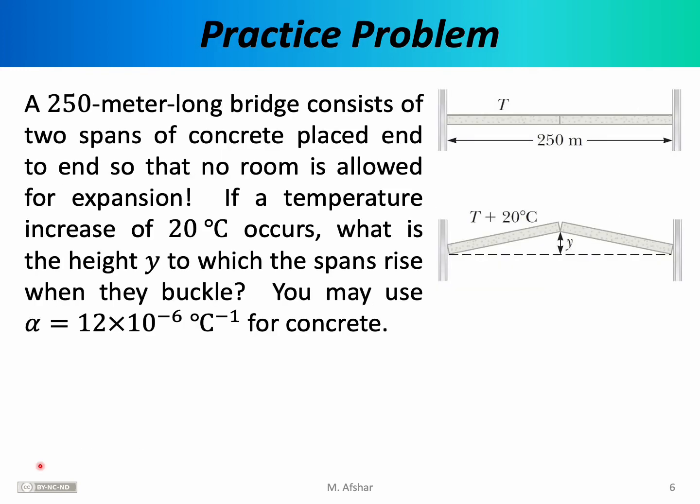Let's end this lecture with a practice problem. A 250 meter long bridge consists of two spans of concrete placed end to end so that no room is allowed for expansion. If a temperature increase of 20 degrees Celsius occurs, what is the height y to which the spans rise when they buckle? The coefficient of thermal expansion for concrete is 12 times 10 to the minus 6. So the situation is depicted here. We have two solid segments or spans of concrete that are placed next to each other side by side without a gap in between them. Now this is not a problem at temperature T, but as we raise the temperature, for example as the ambient temperature rises on a hot day, then the lengths will also increase. Since there is no room for thermal expansion, these two spans will push against each other and they will rise up.